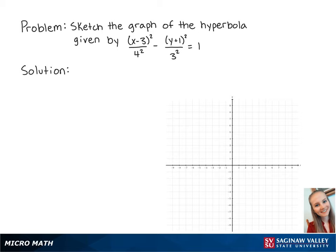For this problem, we're going to sketch the graph of the hyperbola given by (x-3)² over 4² minus (y+1)² over 3² equals 1.